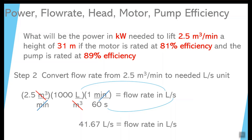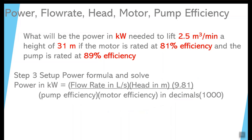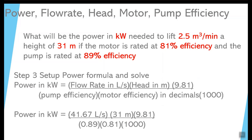Now plug that answer into the formula. Power in kilowatts equals 41.67 liters per second times the head of 31 meters times 9.81, divided by the pump efficiency of 0.89 times the motor efficiency of 0.81, divided by 1,000. The final answer is approximately 17.58 kilowatts.